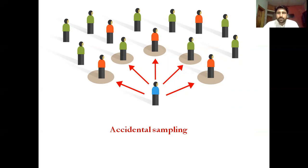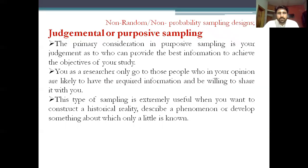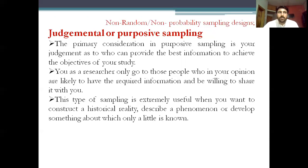Another type of non-random, non-probability sampling is judgmental or purposive sampling. The primary consideration in purposive sampling is your judgment as to who can provide the best information to achieve the objectives of your study. Intentionally, the researcher decides the participants. You as a researcher only go to those people who in your opinion are likely to have the required information and will be willing to share it. This type of sampling is extremely useful when you want to construct a historical reality, describe a phenomenon, or develop understanding about something of which only a little is known.